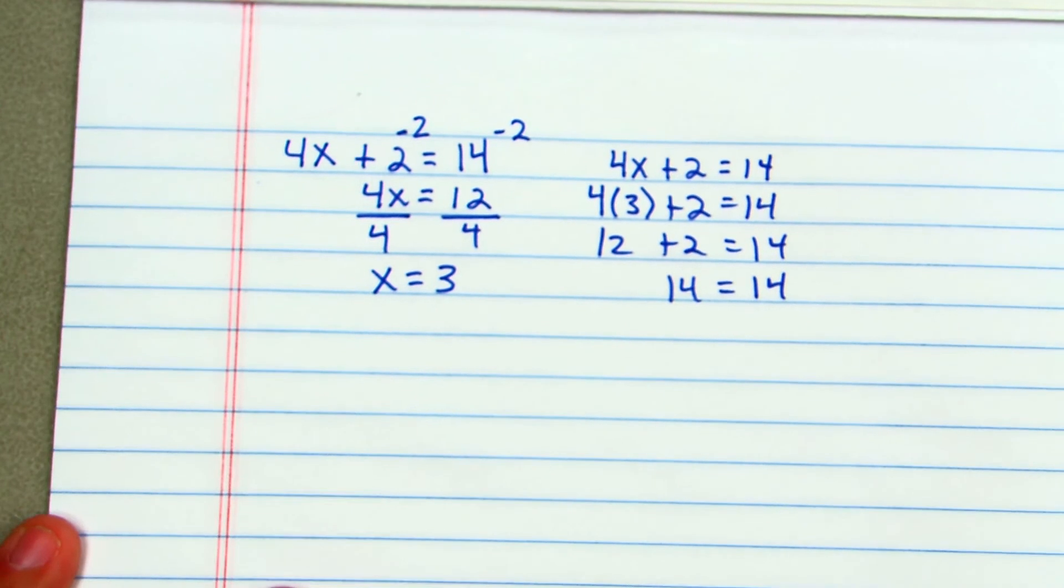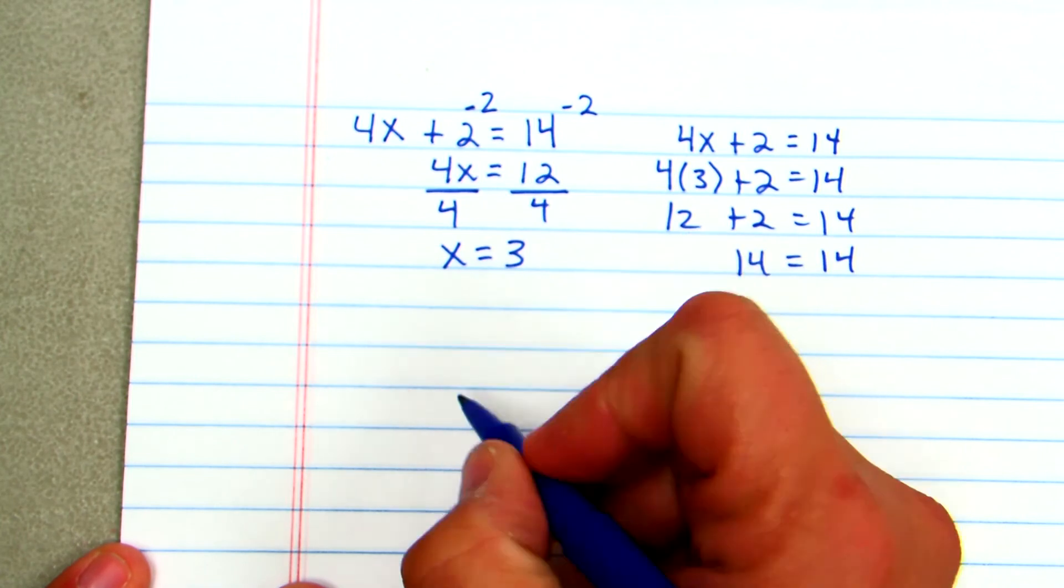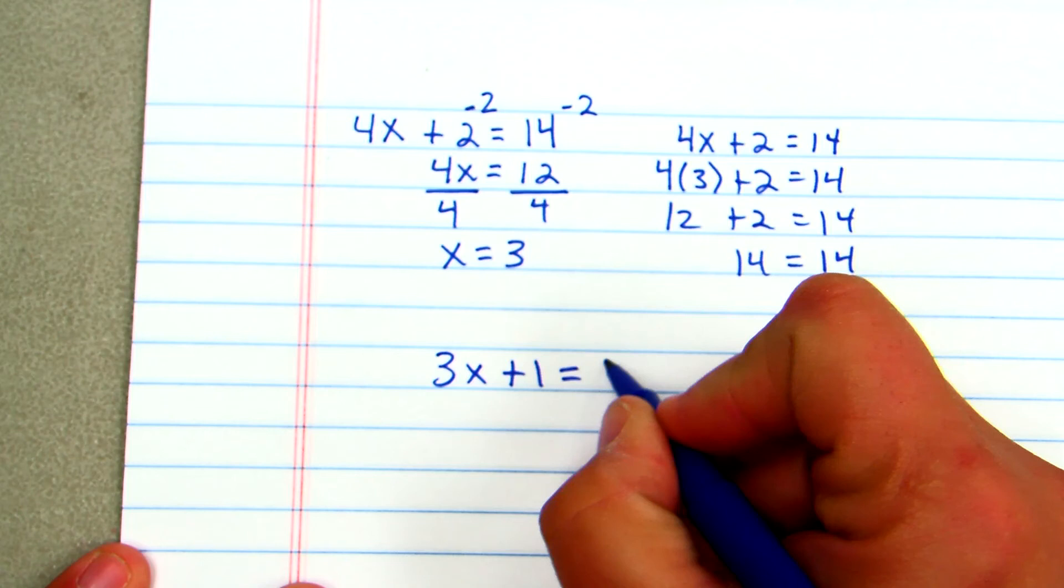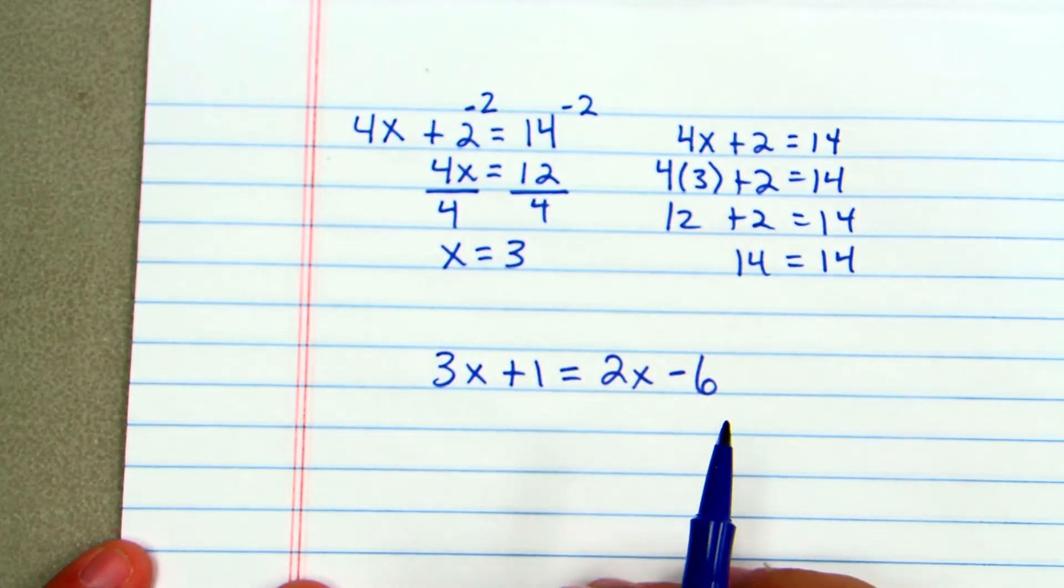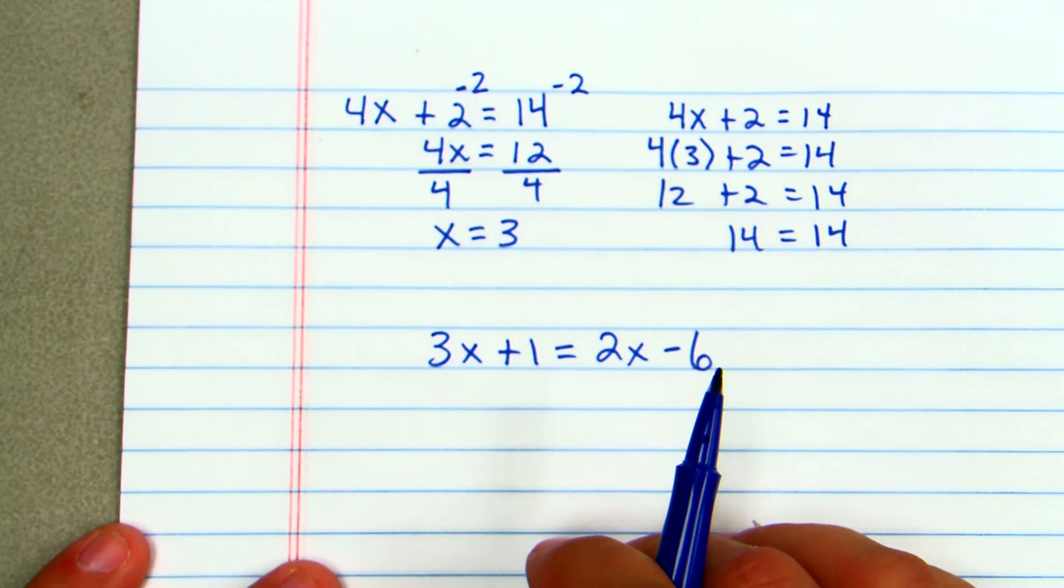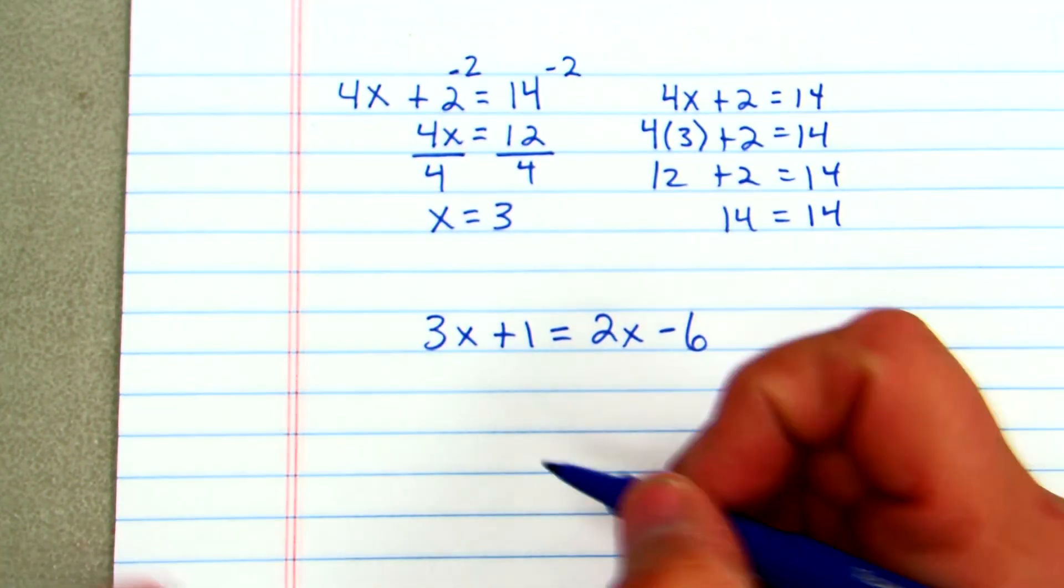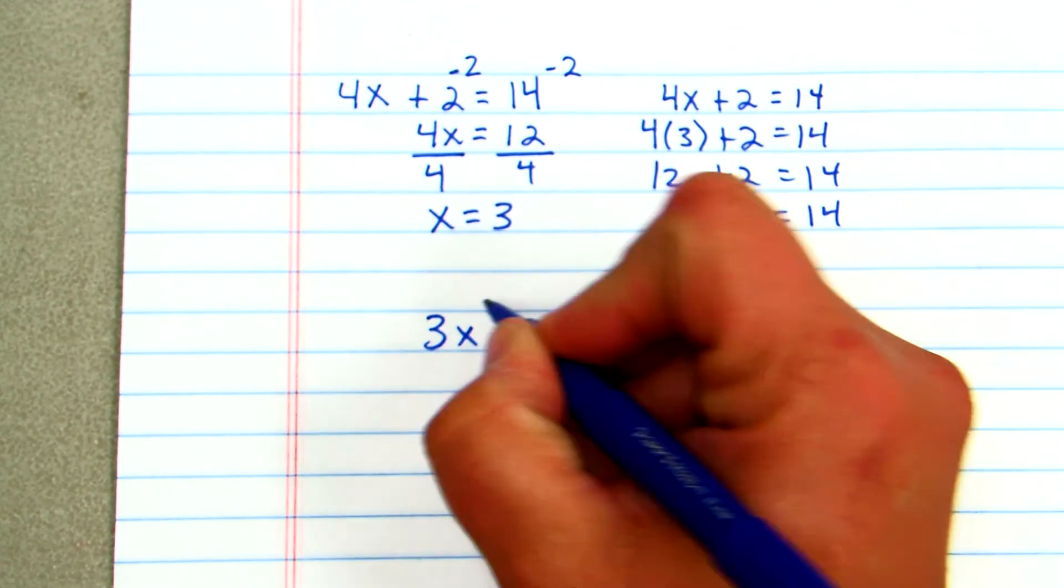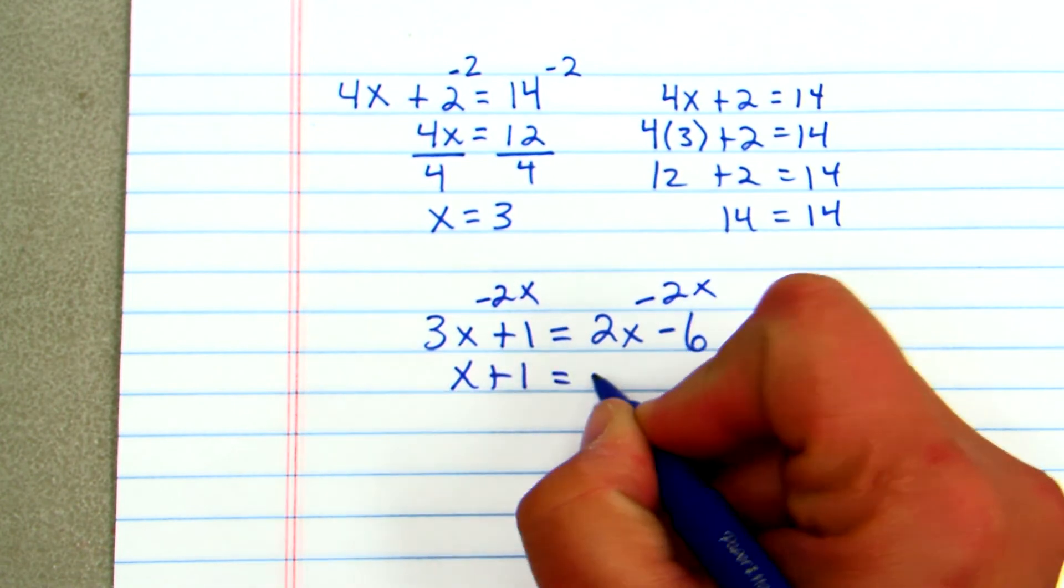Another equation to look at would be one where we have a variable on both sides of the equation. So I could have something as easy as 3x plus 1 equals 2x minus 6. My first step now is going to be to get the x's on one side by themselves. So in this situation, I would subtract 2x from both sides since 2x is positive. That will leave me with x plus 1 equals negative 6.